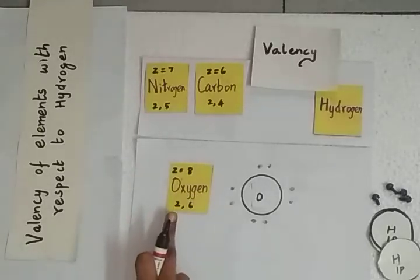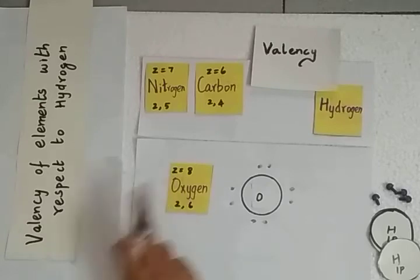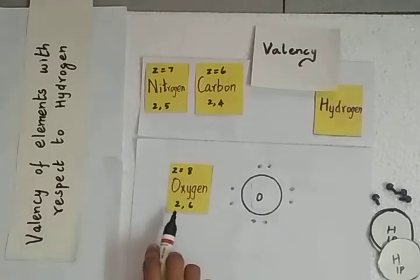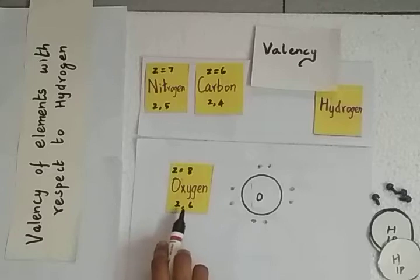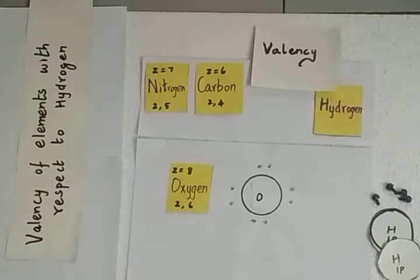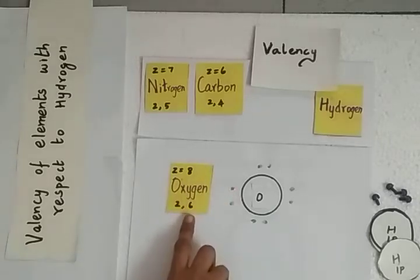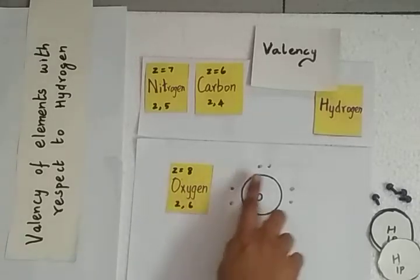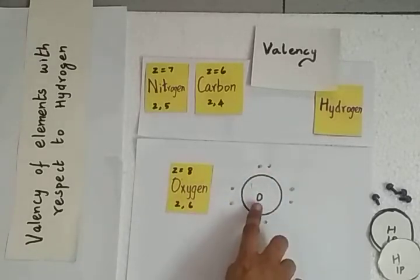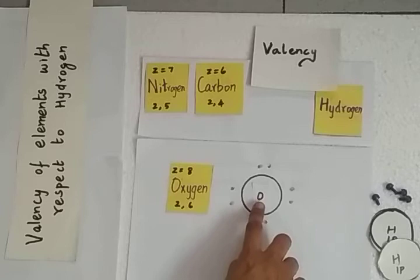The atomic number of oxygen is 8, and its electronic configuration is 2,6 — that is 2 in the K shell and 6 in the L shell, which is its valence shell. We are going to represent only the valence electrons: 6 valence electrons for the oxygen atom, represented here with the symbol O.